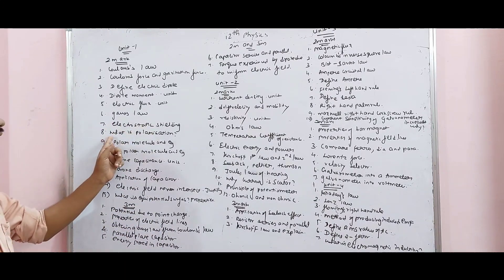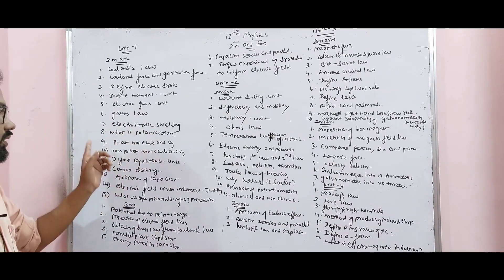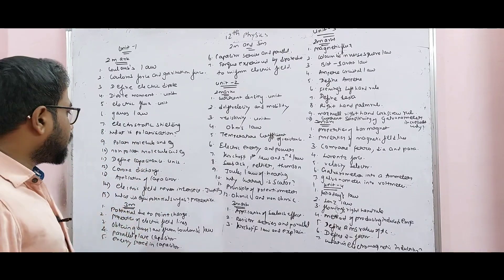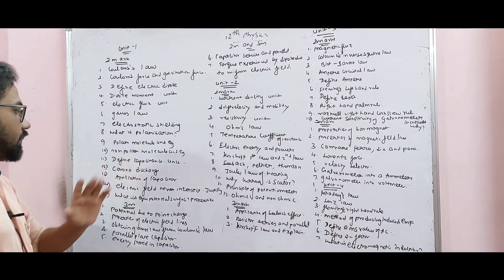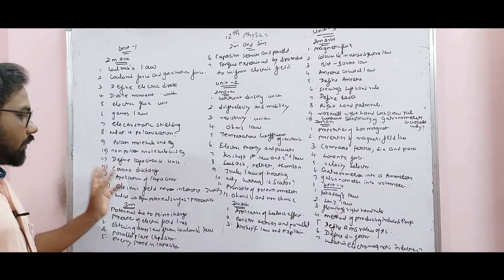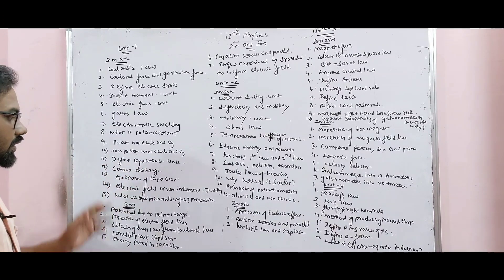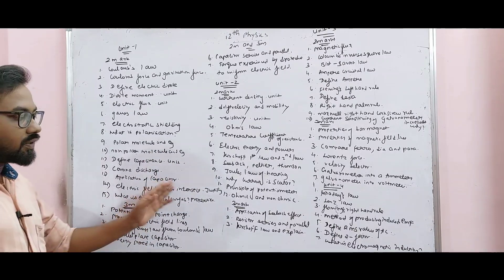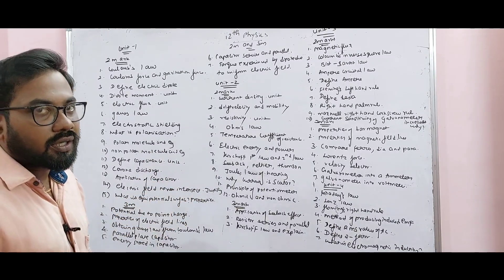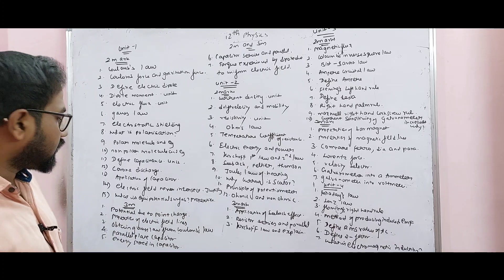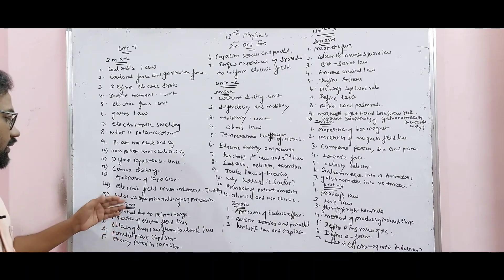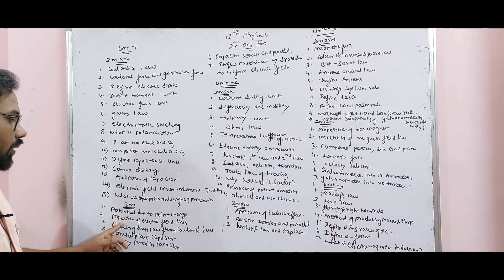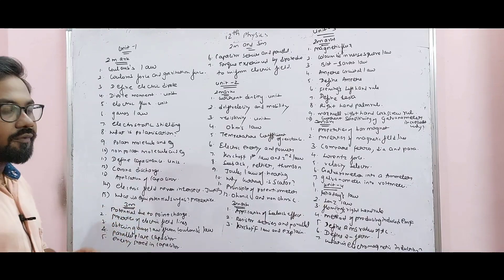Electrostatic shielding, what is polarization, polar molecule with example, non-polar molecule with example, define capacitance, corona discharge, application of capacitor, electric field lines never intersect — justify. What is equipotential surface and its properties. Properties of electric field lines.